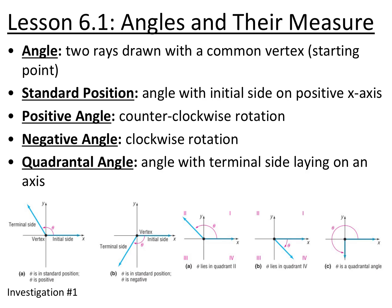Lesson 6.1 covers angles and their measure. This is a review of how we draw and label angles. An angle is two rays drawn with a common vertex or starting point. A standard position of an angle is an angle where the initial side is on the positive x-axis.